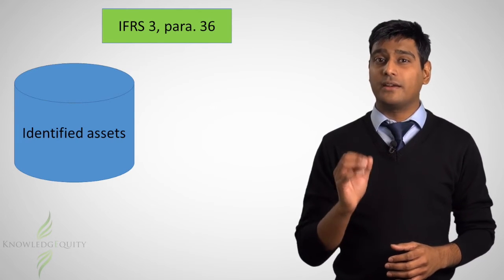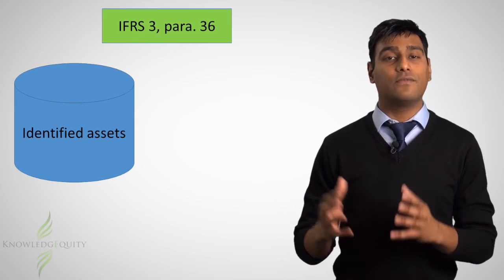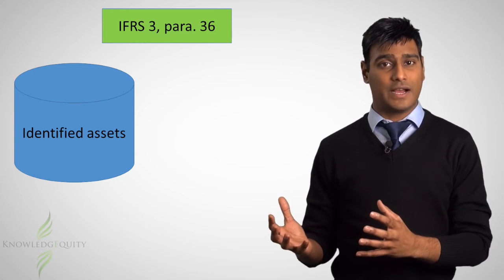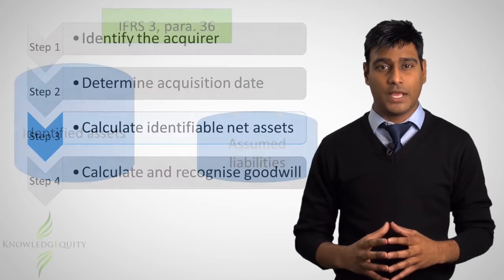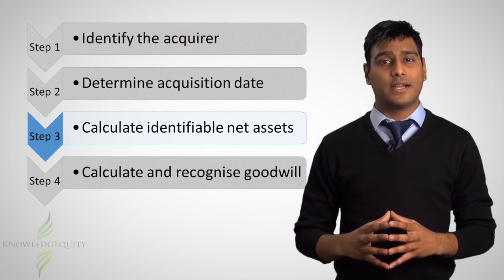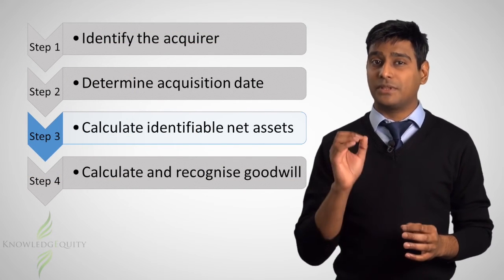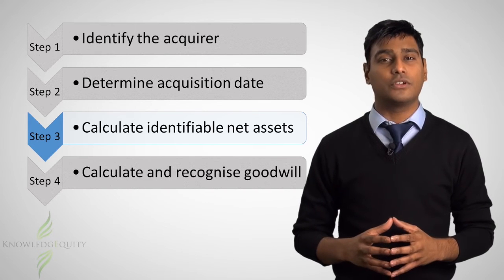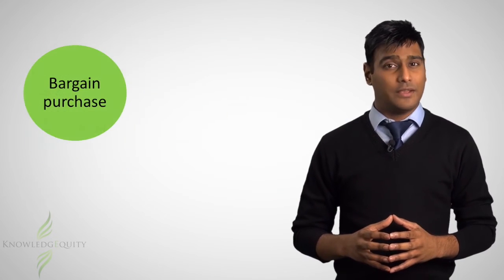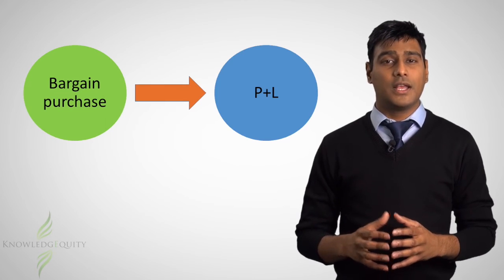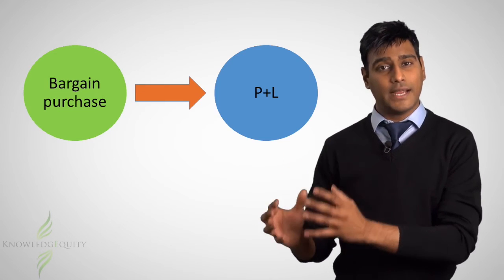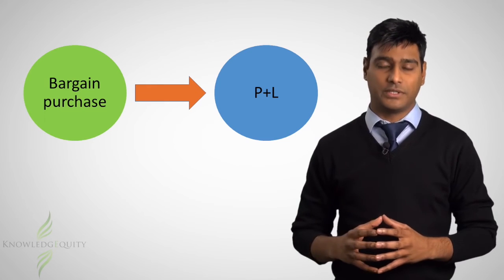IFRS 3 paragraph 36 requires that when there is a bargain purchase, the acquirer is to reassess if all identifiable assets and assumed liabilities have been accounted for. In other words, the acquirer must re-evaluate whether step 3 of the acquisition method was correctly done. If there is still a bargain purchase after reassessing step 3, then the amount shall be recognized directly in profit and loss on the acquisition date.